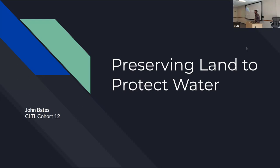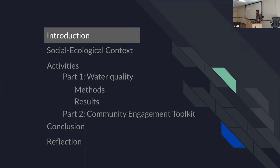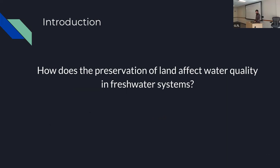How's it going, everybody? For those who don't know me, my name is John Bates with Cohort 12 in the CLTL program here at Colorado State, and my project today is Preserving Land to Protect Water. The agenda today is that I'm going to start with a brief introduction of my project partner and the local landscape and social-ecological context, move on to the activities during this project — water quality monitoring and a community engagement toolkit — and then wrap up with a conclusion and reflection.